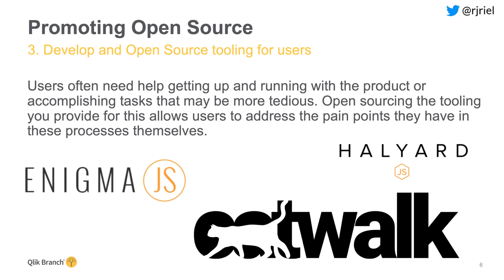Another tool we developed is Enigma.js — our engine is built on a web socket, and for people who don't know how to use web sockets, Enigma.js is a JavaScript library that allows users to easily connect and communicate with the engine. We also have Halyard.js, which allows users to easily load data into the engine using JavaScript. We've open sourced all of these so that if people have issues with our tooling, they can fix it themselves.